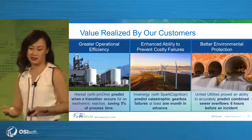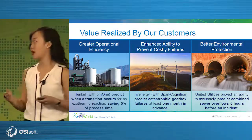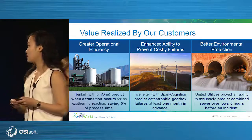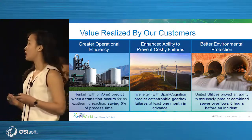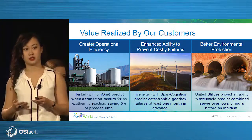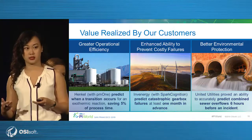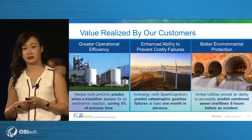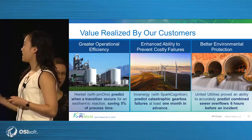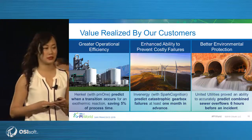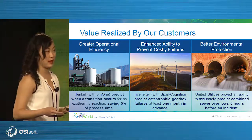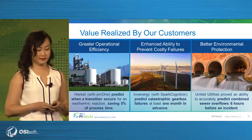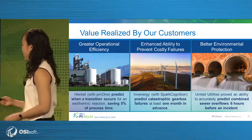You can see statistics and logging of your publishing results. Then go into SAP, refresh the database, and begin the fun work: analyzing that data set and uncovering the insights that your subject matter expertise and the data can support. We also love data showing customer ROI: Henkel achieved greater operational efficiency by predicting transitions, saving five percent of processing time; Invenergy predicted catastrophic gearbox failures at least one month in advance; and United Utilities proved an ability to predict sewer overflows at least six hours in advance to respond in real time and protect the environment.